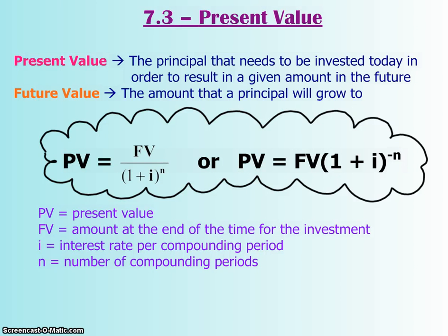Is there something that you're saving up for in the future? Say like your education, or maybe a car, or even better yet, that perfect vacation. Well, that's what 7.3 is all about. We're talking about present value.